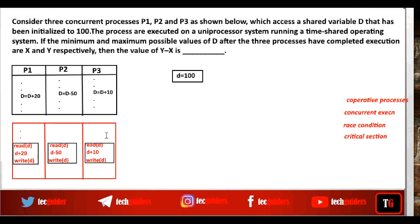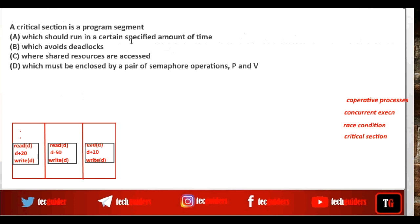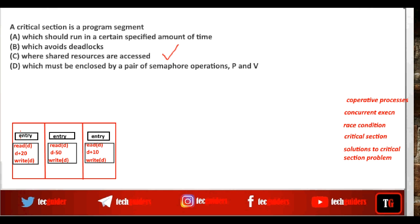To avoid problems due to the critical section, we should prevent processes from entering the critical section at the same time. Regarding the MCQ: a critical section is a program segment where shared resources are accessed — the answer is C. Solutions to critical section problems add entry code at the beginning of the critical section and exit code while exiting, ensuring that processes are properly synchronized.